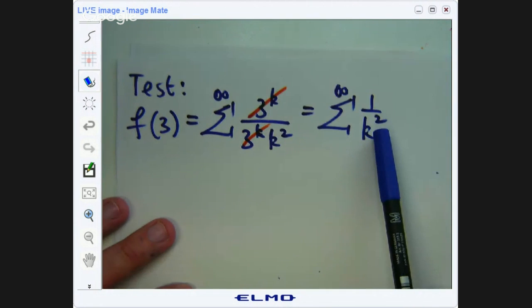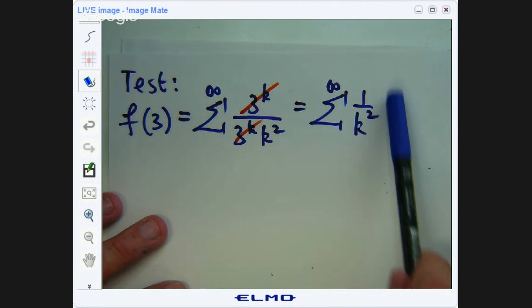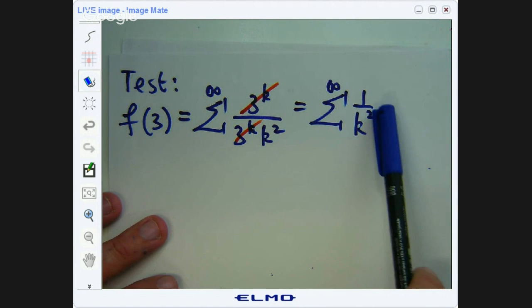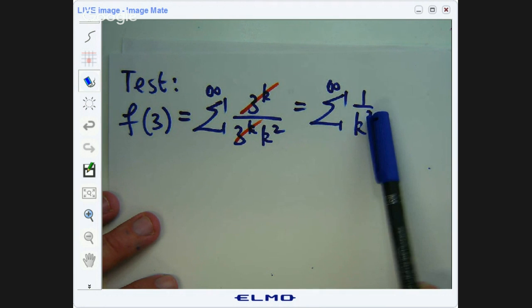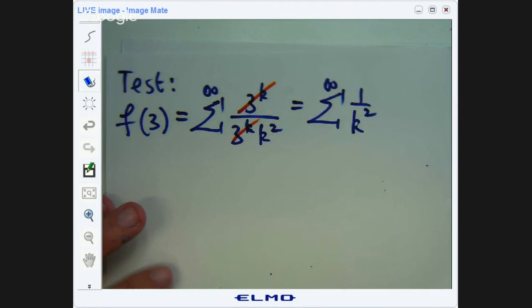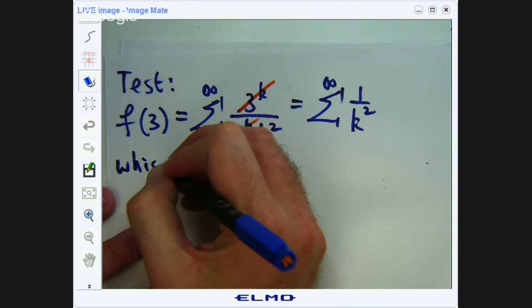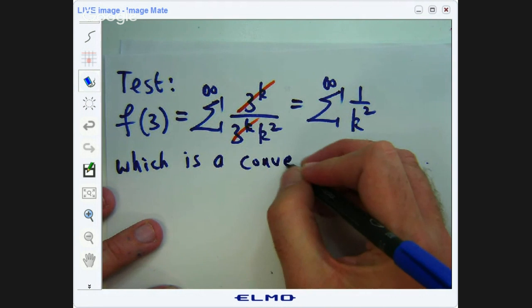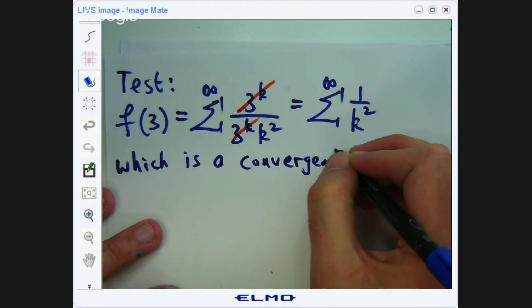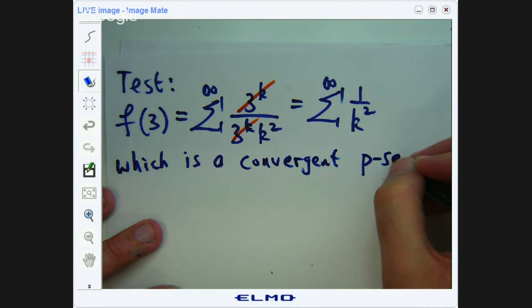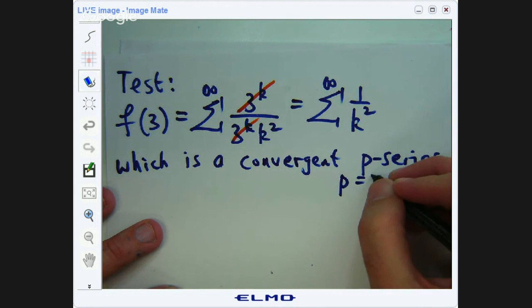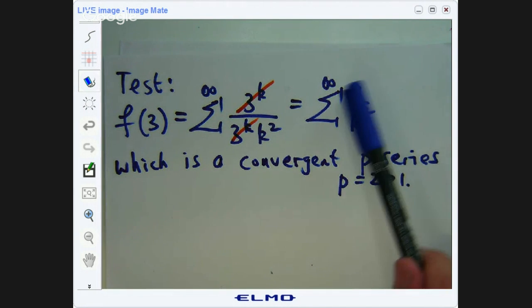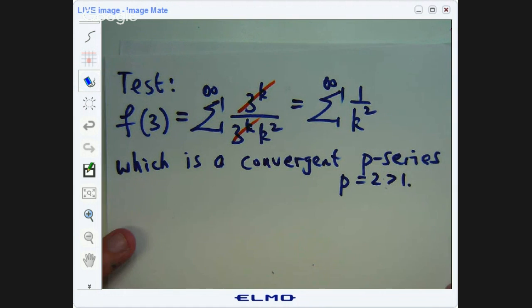Now, this is a special kind of series called a p-series. It's 1 over k to some power, and the power here is 2, which is greater than 1. So we know that this whole thing converges. Convergent p-series with p equal to 2, which is strictly greater than 1. So this is the test. If p was less than or equal to 1, this thing would diverge. Let's test the other endpoint.